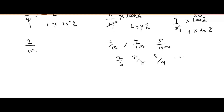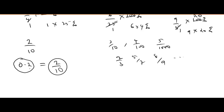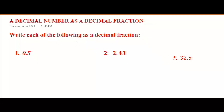For example, 0.2 is a decimal fraction in the form of a decimal number, and 2/10 is the same decimal fraction in the form of a numerator and denominator. I will show you how to convert from one form to the other — write each of the following as a decimal fraction.